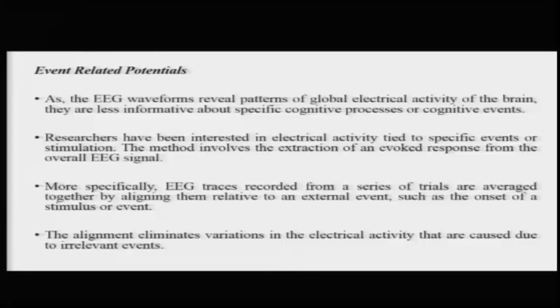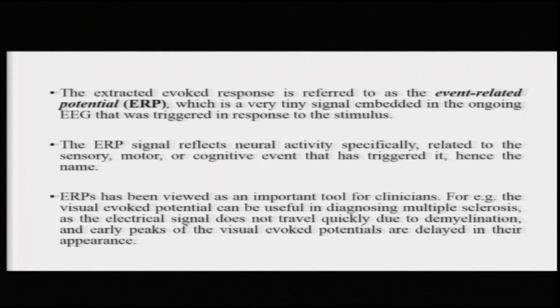This alignment eliminates variation in the signal that happens due to random reasons — such as natural background brain activity or other environmental stimuli. The extracted response, called the event related potential, is a very tiny signal embedded in the ongoing EEG that was triggered in response to the stimulus. This ERP signal reflects neural activity specifically related to the sensory, motor, or cognitive event that triggered it, making it possible to correlate the chronology of stimulus presentation with the chronology of brain events unfolding in response.